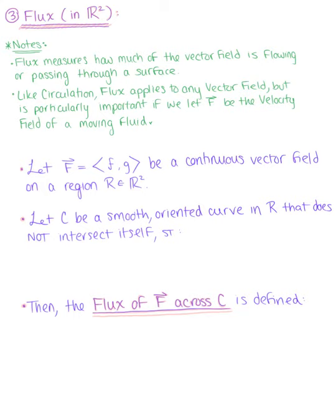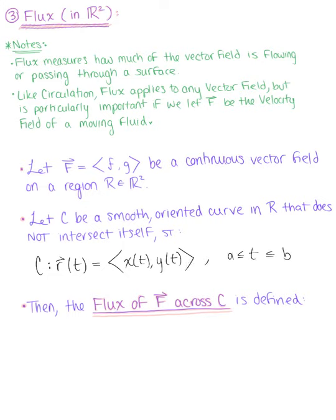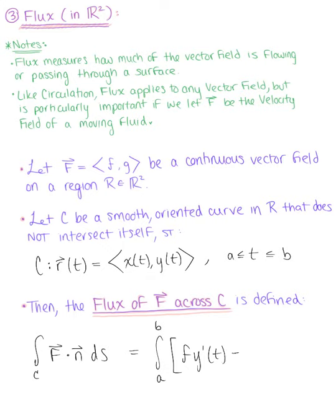Here's our definition. We let vector F be defined by the components F and G, a continuous vector field on a region R in two dimensions. We also let C be a smooth oriented curve in R that does not intersect itself, such that C is defined by the vector-valued function R of T with components X(T), Y(T), such that T is greater than or equal to A and less than or equal to B. Then the flux is defined by the vector line integral over C of the dot product of this vector field with the principal unit normal vector with respect to the arc length. When we convert this formula to an arbitrary parameter T, this becomes the integral from A to B of F multiplied by the derivative of Y with respect to T, minus G multiplied by the derivative of X with respect to T, dt.